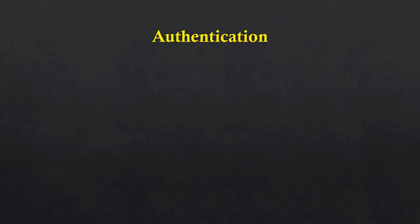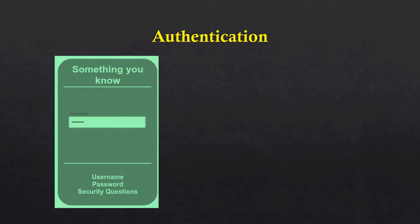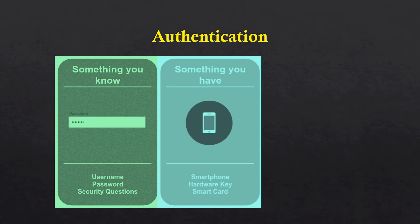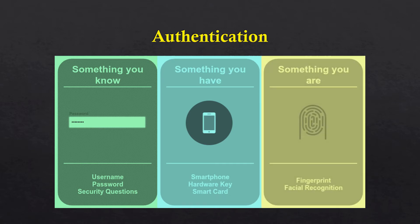Authentication requires proof in one of the following three possible forms. The first is something you know, for example a password or a pin number — this is only known by you. The second is something you have, for example a token or a key. The third is something you are, for example biometric features like fingerprint or voice.